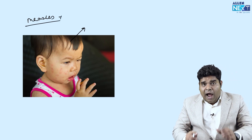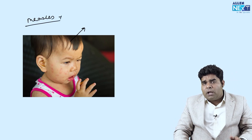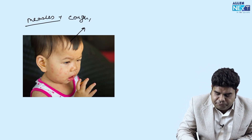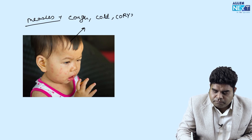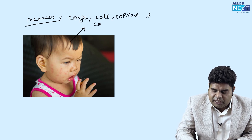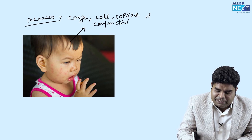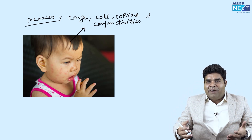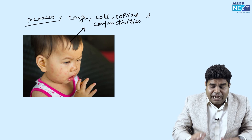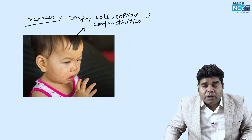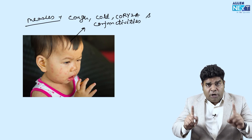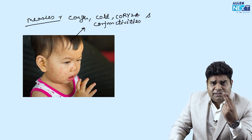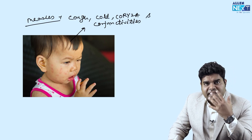How do you differentiate measles from chickenpox? One very important feature is that measles occurs with cough, cold, coryza, and conjunctivitis — meaning watery discharge from the nose and eyes. Measles rashes are accompanied by secretions. Remember clearly: chickenpox and rubella are both dry fever with rash — no secretions occur. In measles, there will be secretions.